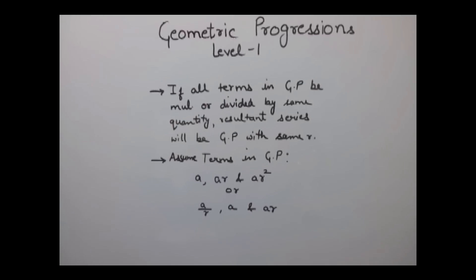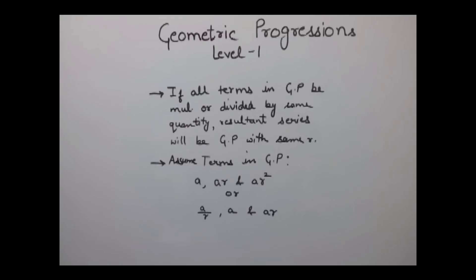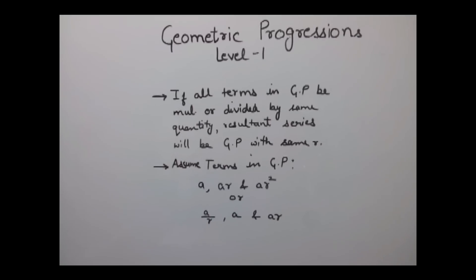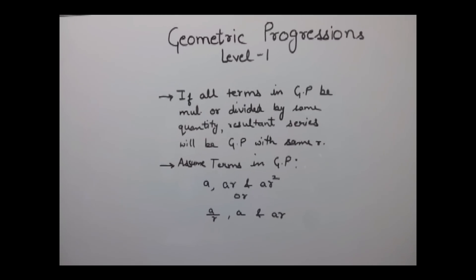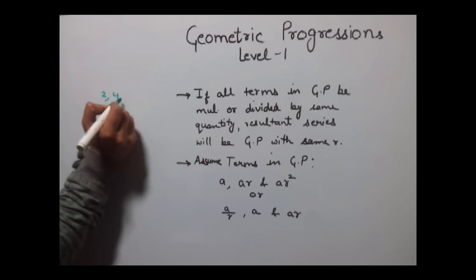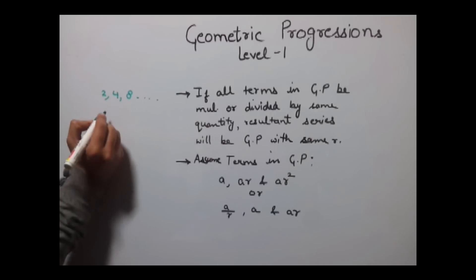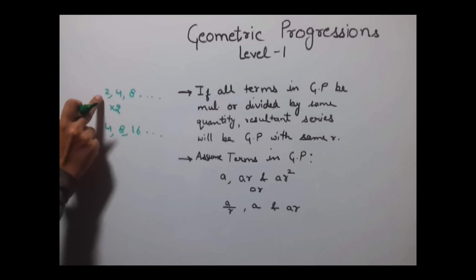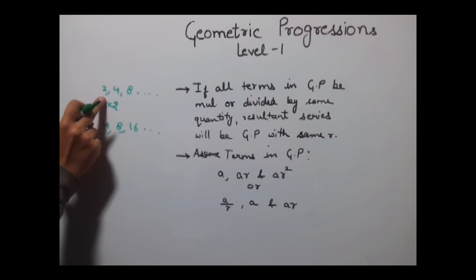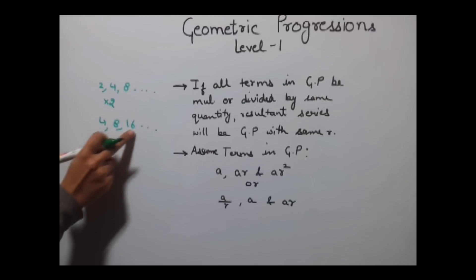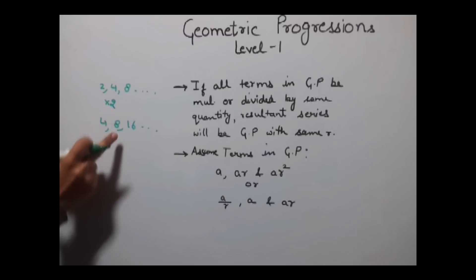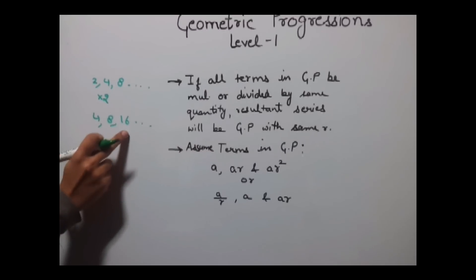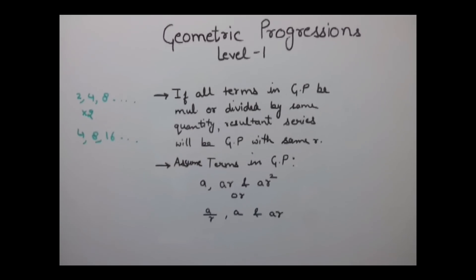The first point is that if all terms in a GP are multiplied or divided by the same quantity, the resultant series will be a GP with the same common ratio R. For example, the series 2, 4, 8 multiplied by 2 gives 4, 8, 16. The common ratio in the original series is 2 (4/2=2, 8/4=2), and in the new series it is also 2 (8/4=2, 16/8=2). This is one important factor to remember.